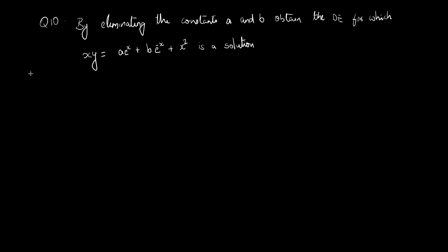Question 10. By eliminating the constants a and b, obtain the differential equation for which xy equals a e raised to x plus b e raised to minus x plus x squared is a solution. We have our family of curves. It has two arbitrary constants. To obtain the differential equation, we have to eliminate a and b. The differential equation which satisfies this will be of second order, since we have two arbitrary constants.